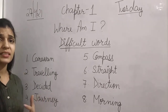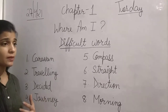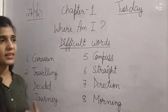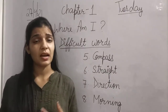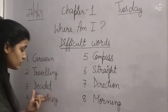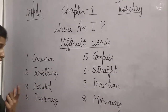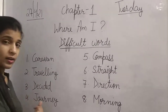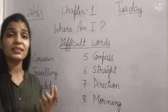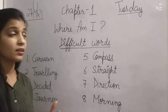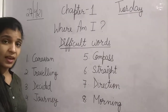Sometimes we decide something. For example: I have decided that we are going to Delhi tomorrow — so this is 'decided.' The next word is J-O-U-R-N-E-Y. Journey. The meaning of journey is 'yatra.' Traveling is 'yatra karna' and journey is 'yatra.'